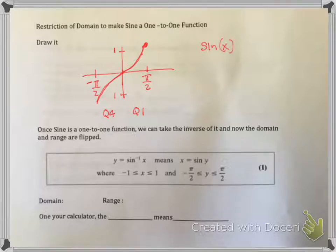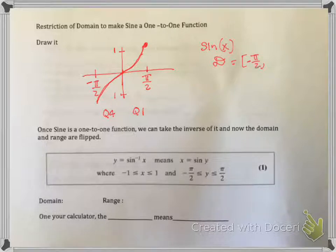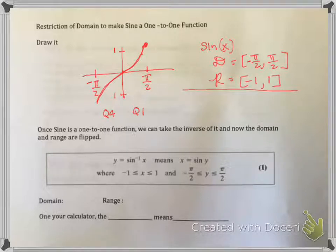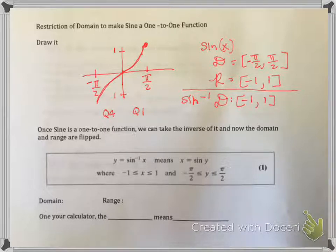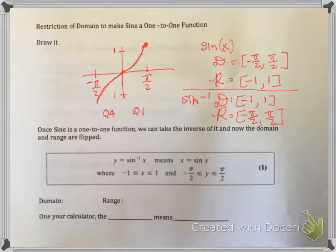So we're looking at sine x — it's restricted, remember. The domain of this is negative pi over two to pi over two, and the range is negative one to one. If I take the inverse of sine, remember this is its inverse function. So what becomes the domain is the range and what's the range becomes the domain. So the domain is now negative one to one and the range is negative pi over two to pi over two. If you take the inverse function of something, the domain becomes the new range and the range becomes the new domain — so it flip-flops values.